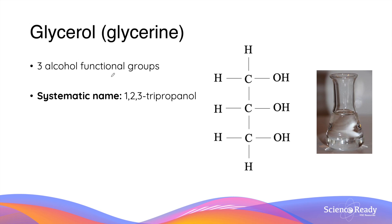Glycerol is an organic molecule with three alcohol functional groups. Each functional group of alcohol is attached to a different carbon atom as shown here. Therefore, the systematic name of glycerol is 1,2,3-tripropanol. Since the alcohol functional group is very polar and able to form hydrogen bonds with water, glycerol is usually very soluble in water.